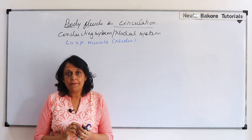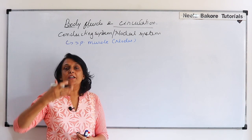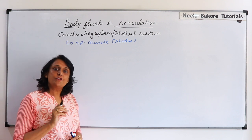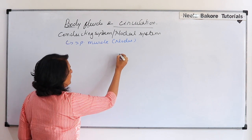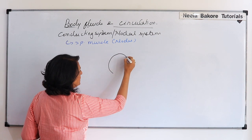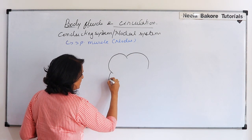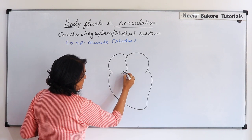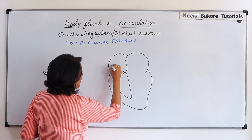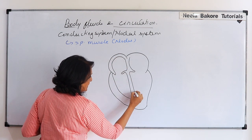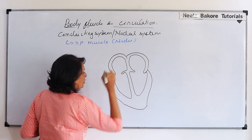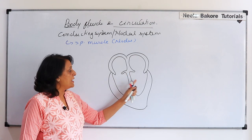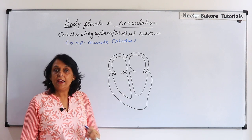Now let's look at the location. If we take a vertical section, in this diagram we don't label the rest of the diagram. The whole focus is only on the conducting system or nodal system. So here we have to make a little thick diagram so that we can properly draw the nodal system and show its location. We don't focus on or label things like interauricular septum, ventricle, or these valves.